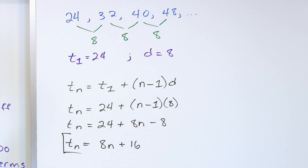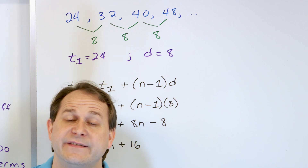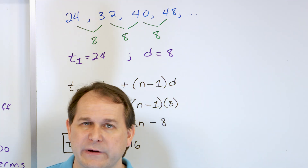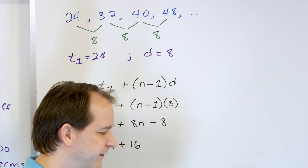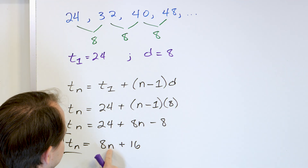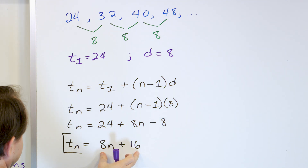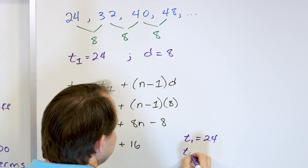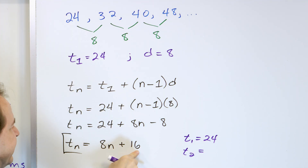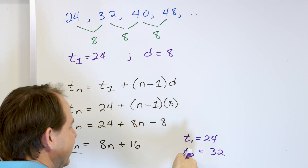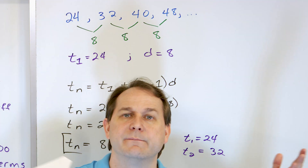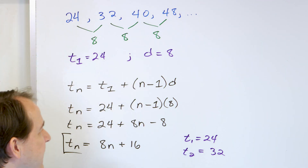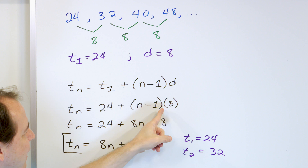This is the equation for the nth term of this arithmetic sequence. Something times n plus something in general creates an arithmetic sequence. Always check: put n equal to 1 — 8 times 1 is 8, plus 16 is 24. That matches T sub 1. Put n equal to 2 — 16 plus 16 is 32. Correct. And you can verify terms 3 and 4 similarly. This equation also lets you calculate T sub 95 or T sub 1034 without repeated addition.